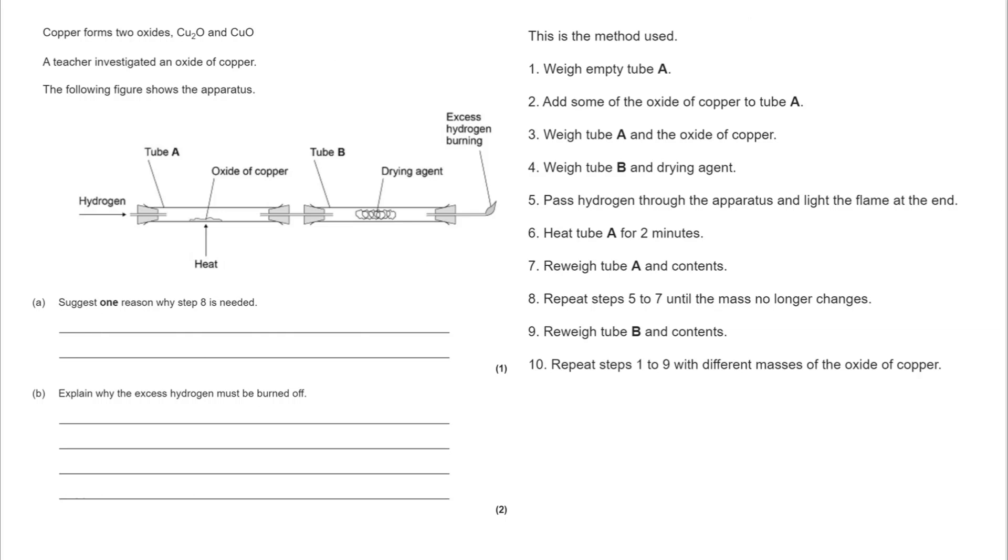Going back to part A, we've got copper 2 oxide and copper 1 oxide. We're investigating what happens when they are heated in tube A, and in tube B we have a drying agent.